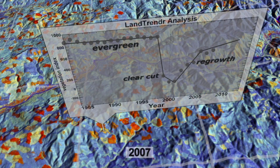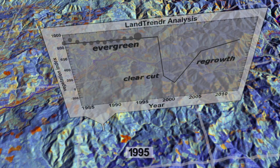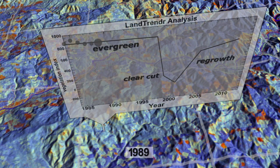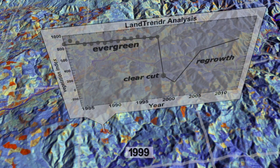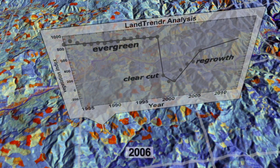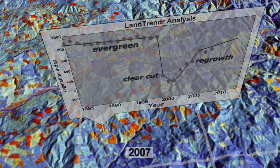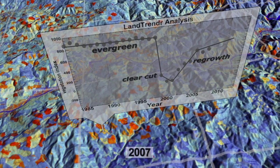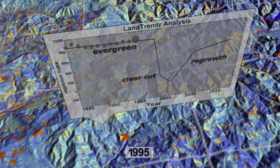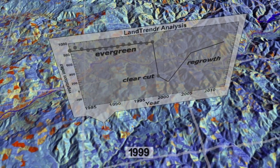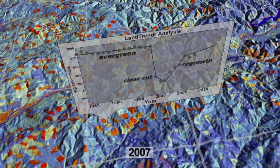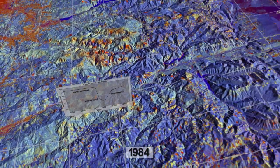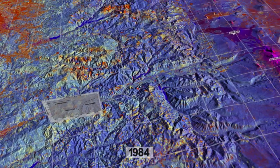That soil signal that was there, that you saw right after the clear cut, immediately starts getting obscured. Grass will come in, shrubs will come in. So as that happens, the soil gets covered up. And so you can actually watch that whole process happen — from an older forest to this bright soil to recovering vegetation.